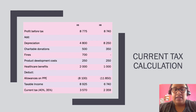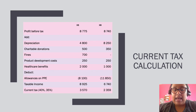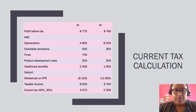Looking at the tax calculation in illustrative example 2: it starts with profit before tax, then adjusts for differences between accounting and tax. The depreciation expense recognized gets added back, while the allowances on PPE get subtracted. Charitable donations are added back to eliminate their impact since they are not deductible. Fines are also added back because they were recognized as an expense but are not deductible for tax purposes. Product development costs — amortized at 250 per annum — are added back because the deduction was already taken in X2.